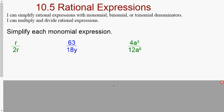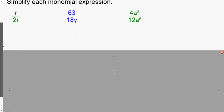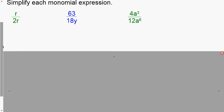Good day everyone. Today we are talking about section 10.5, rational expressions. You can simplify rational expressions with monomial, binomial, and trinomial denominators, and you can multiply and divide rational expressions. We're going to talk about monomials, then binomials, then trinomials. Whenever we have a monomial expression, it's literally using the quotient property with variables and just reducing fractions.